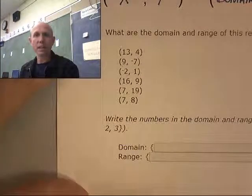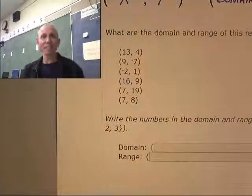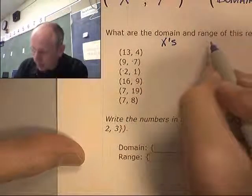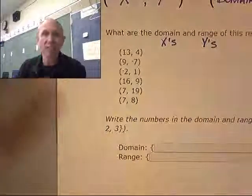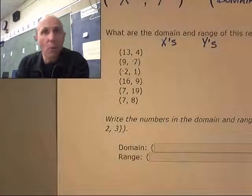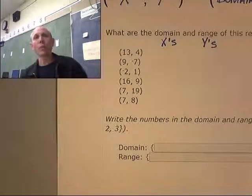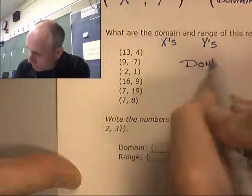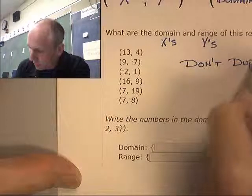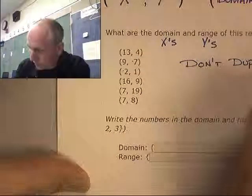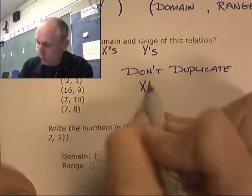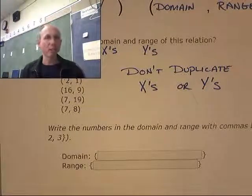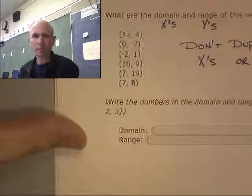This question, what are the domain and range of this relationship? What that's really asking for is if it's asking for the domain, it's asking for the X's. What are the X's and what are the Y's? Pretty simple. When you're writing your domain and range, you usually don't duplicate numbers. So don't duplicate X's or Y's. If I have the same X twice, I'm only going to write it down once.